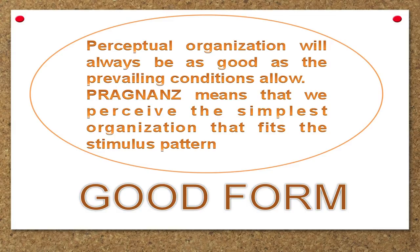The first law is good form, or the law of Pregnance. This law states that perceptual organization will always be as good as the prevailing conditions allow — the simplest organization requiring the least cognitive effort will always emerge. Pregnance means that we perceive the simplest organization that fits the stimulus pattern. In German, Pregnance means clarity, so laws of Pregnance are laws of clarity. A law of Pregnance identifies an organizational tendency — a way in which the human brain decides that things go together.